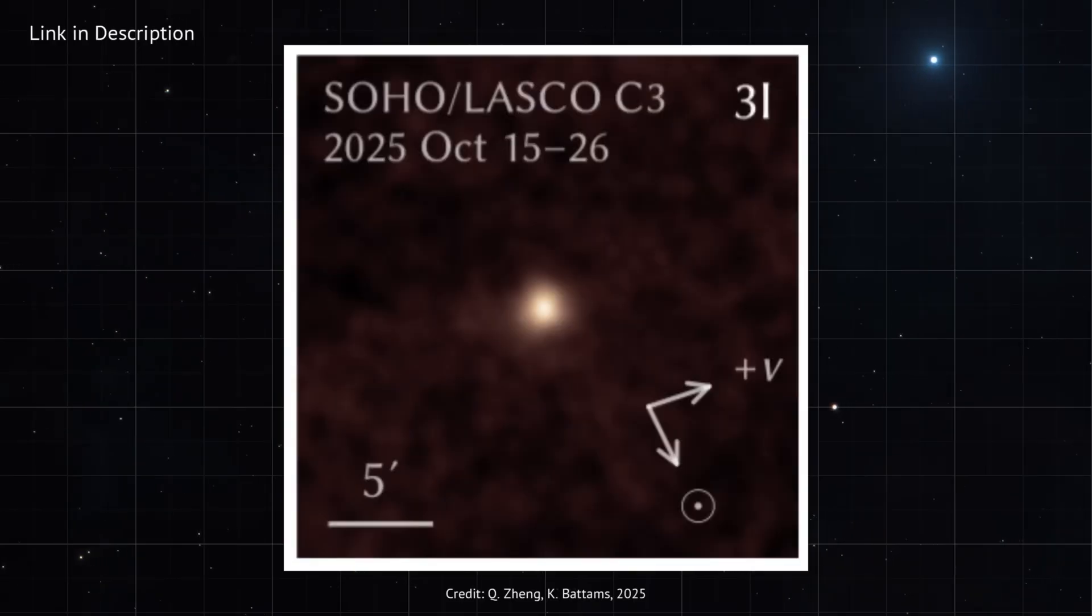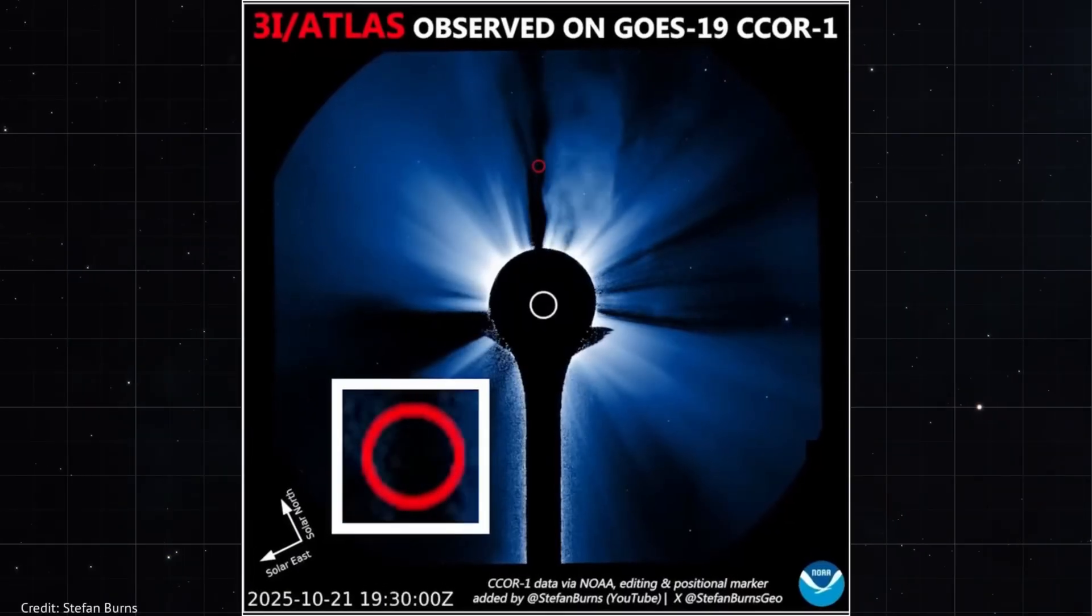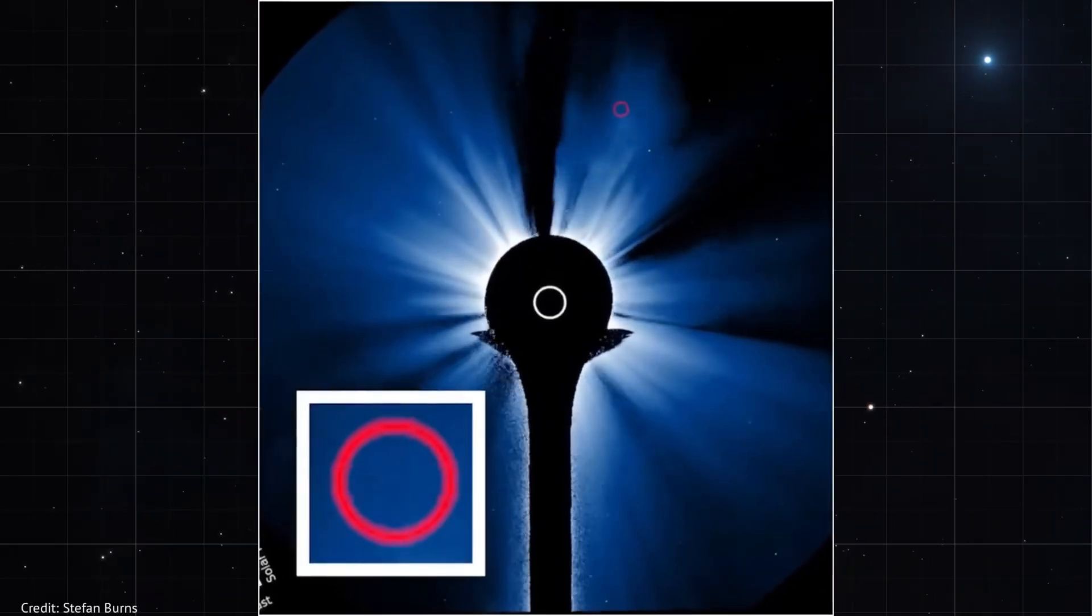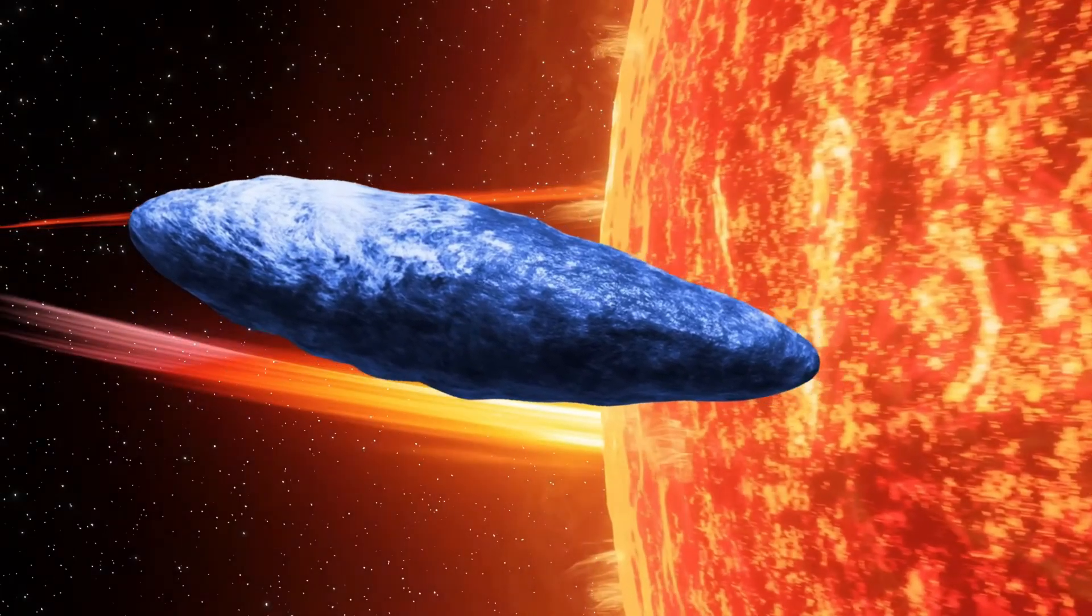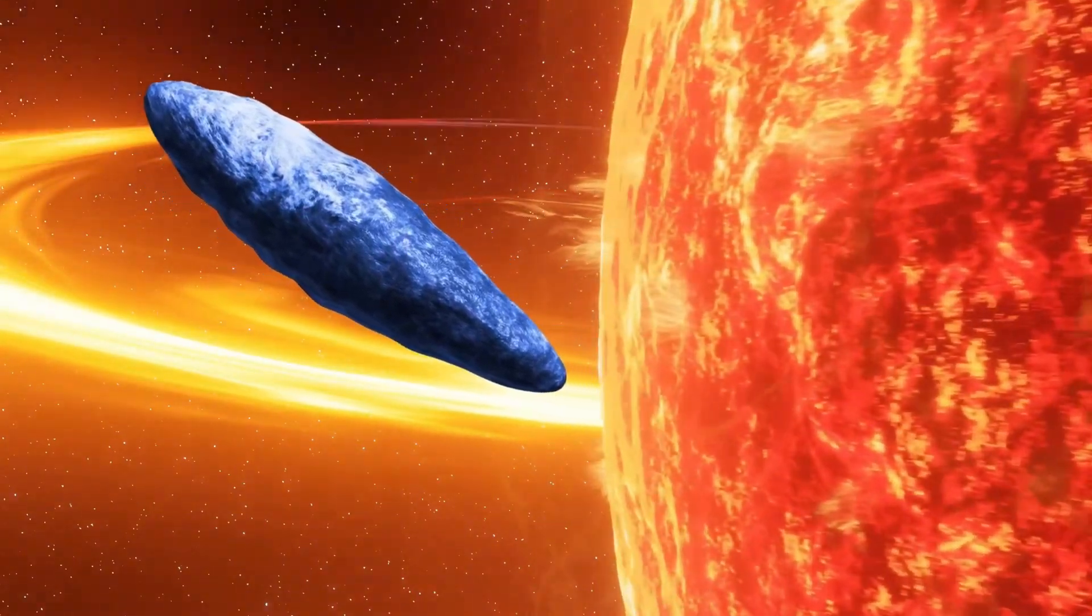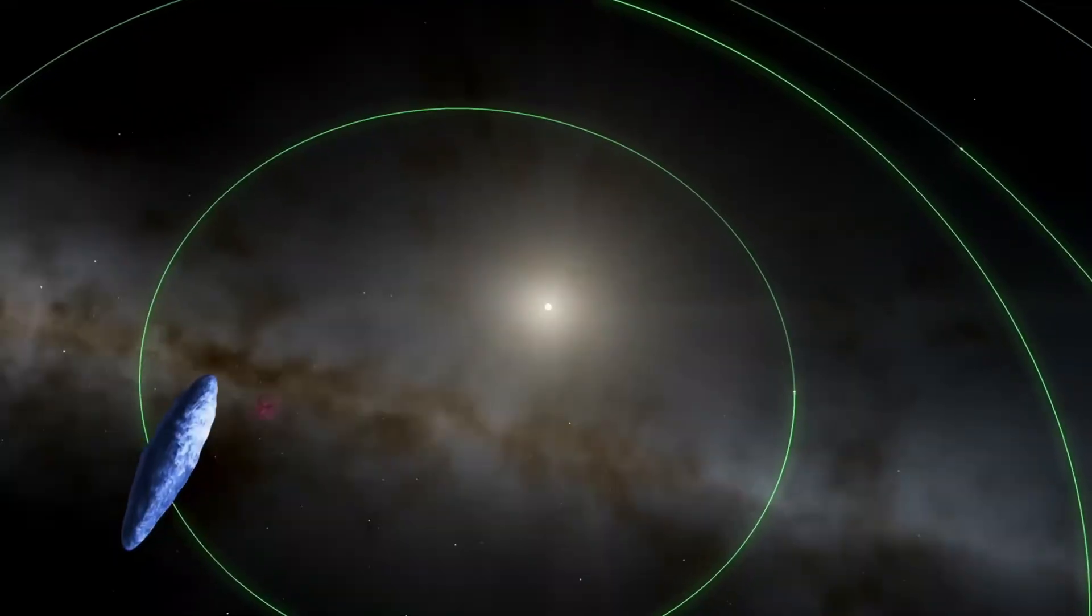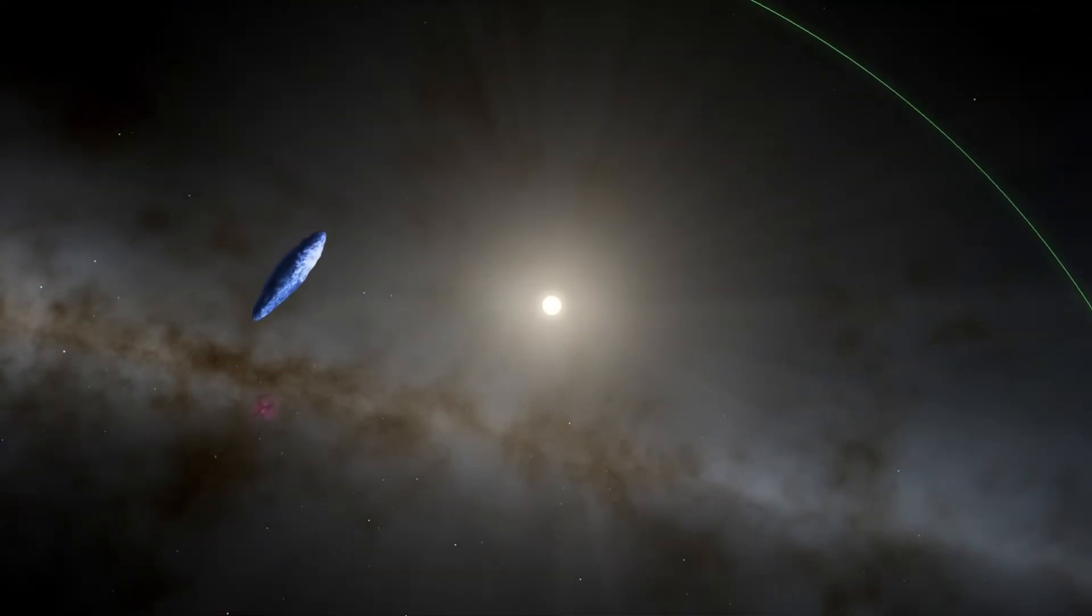Now, look at those images again. November 6th shows a faint tail. November 10th shows a clearer tail. November 11th shows a dramatically extended tail, sharp and structured. That progression tells us something specific. The comet is venting more gas, and more material is sublimating from its surface. The activity is increasing.